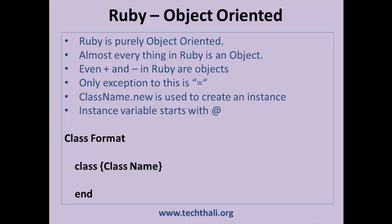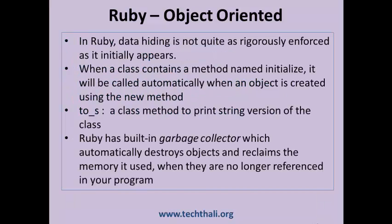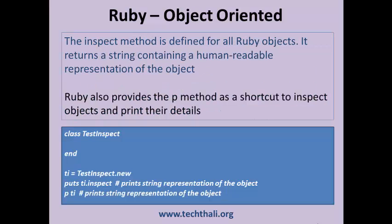The format of a class is 'class ClassName' and it terminates with an 'end' keyword. Data hiding is not rigorously enforced. The initialize method acts as a constructor if it is defined in a class. To print a string version of a class, use the to_s function. Like Java, Ruby also has built-in automatic garbage collection. Every Ruby object has an inspect method which returns a human readable string representation of the object. Ruby also has a p method which is a shortcut for the inspect method.